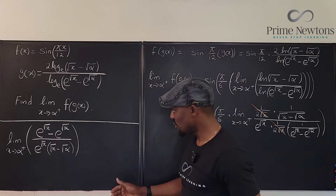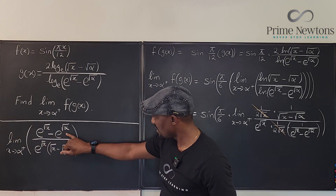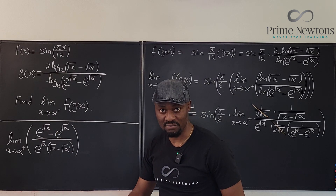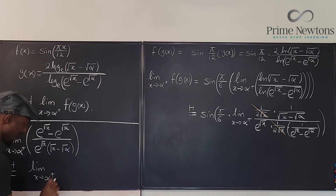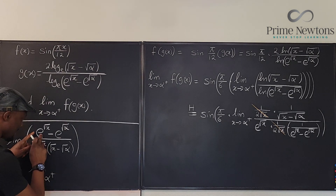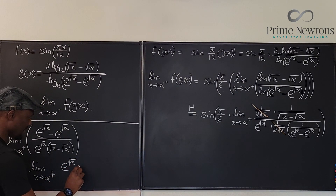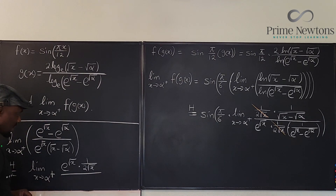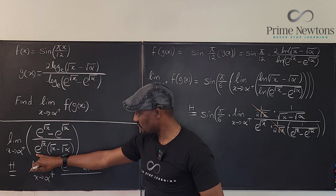We don't know the result yet, so let's plug in alpha from the right. These terms become equal, giving zero over zero — so we still need to apply L'Hôpital's rule one more time. The derivative of the numerator e^√x − e^√α is just the derivative of e^√x, which gives zero from the constant. The denominator is a product of two functions, so we need the product rule.